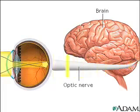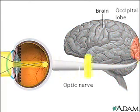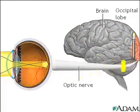Impulses travel down the optic nerve to the occipital lobe of the brain, which then interprets the image of the candle in the correct perspective.